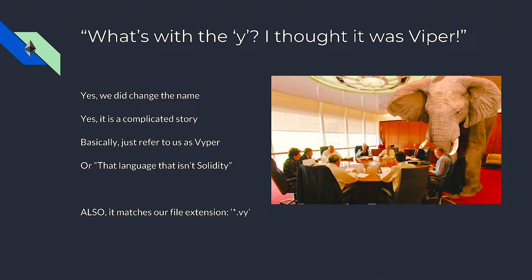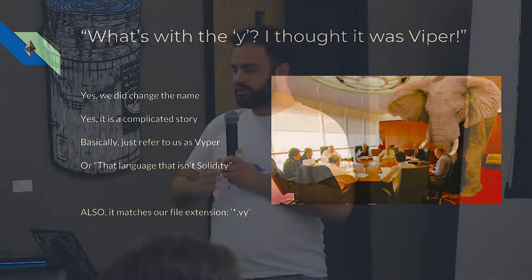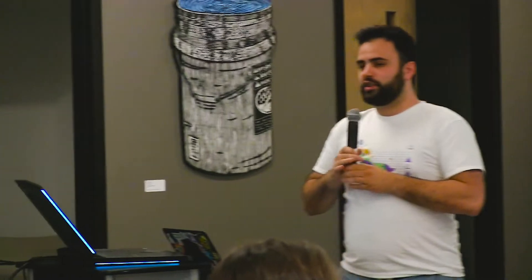So just a little bit of an elephant in the room. If you guys know the history of Viper, it used to be called Viper with an I, and we changed the I to a Y — it's a really complicated story — and we changed the file extension now, so that's awesome. We kind of leveraged a lot of Python's design goals when we came up with the ideas for how we're going to design Viper.